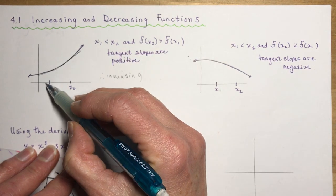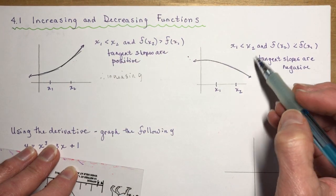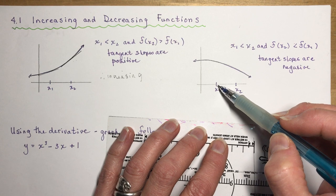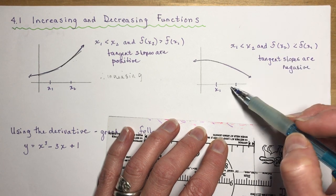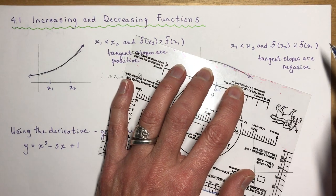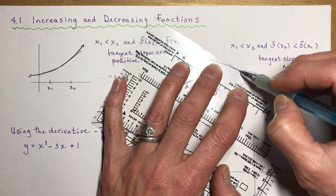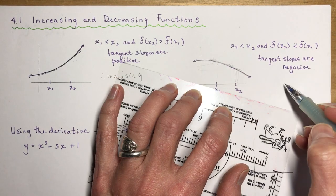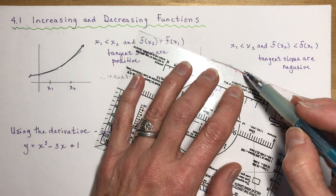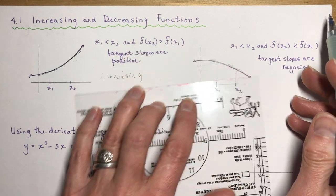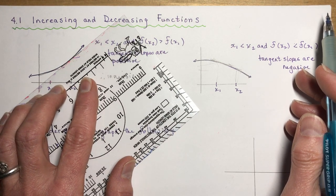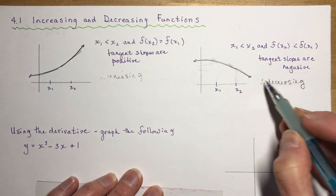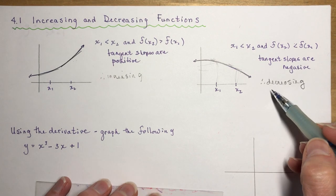Reading from left to right, if the function gets higher it's increasing. For a decreasing function, x₁ < x₂ but f(x₂) < f(x₁), and the tangent slopes are negative. Note that tangent lines in a decreasing interval are above the function, while in an increasing interval they are underneath — this will be important when we discuss points of inflection.